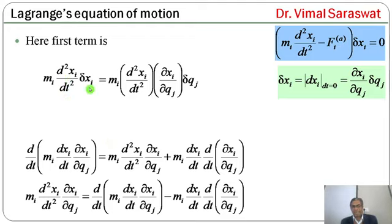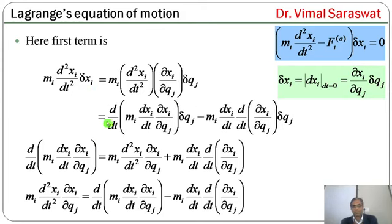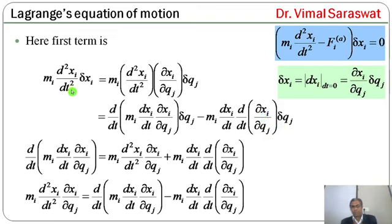Substituting this back, mi * d²xi/dt² * δxi equals: [d/dt(mi * dxi/dt * ∂xi/∂qj) - mi * dxi/dt * d/dt(∂xi/∂qj)] * δqj.